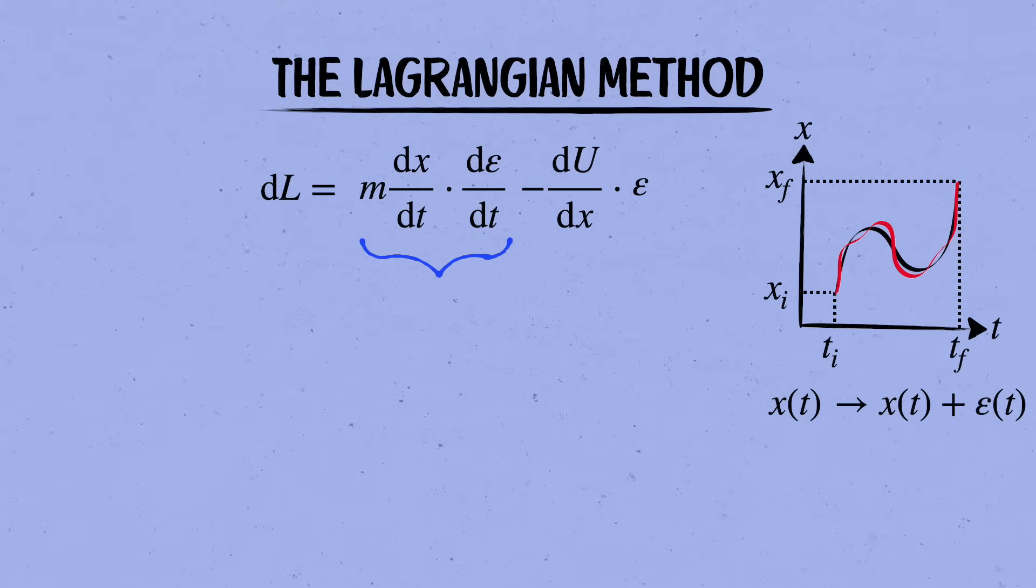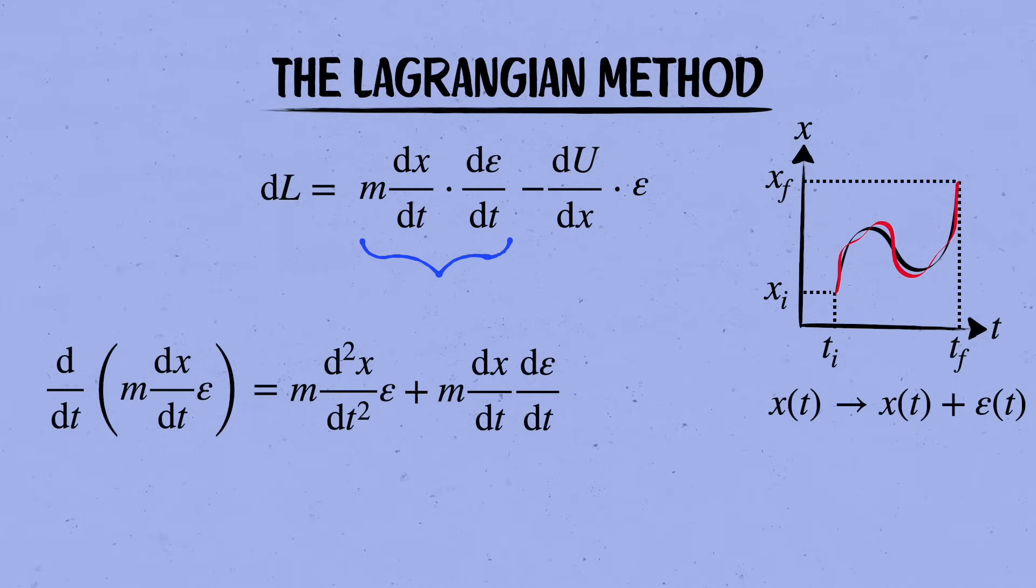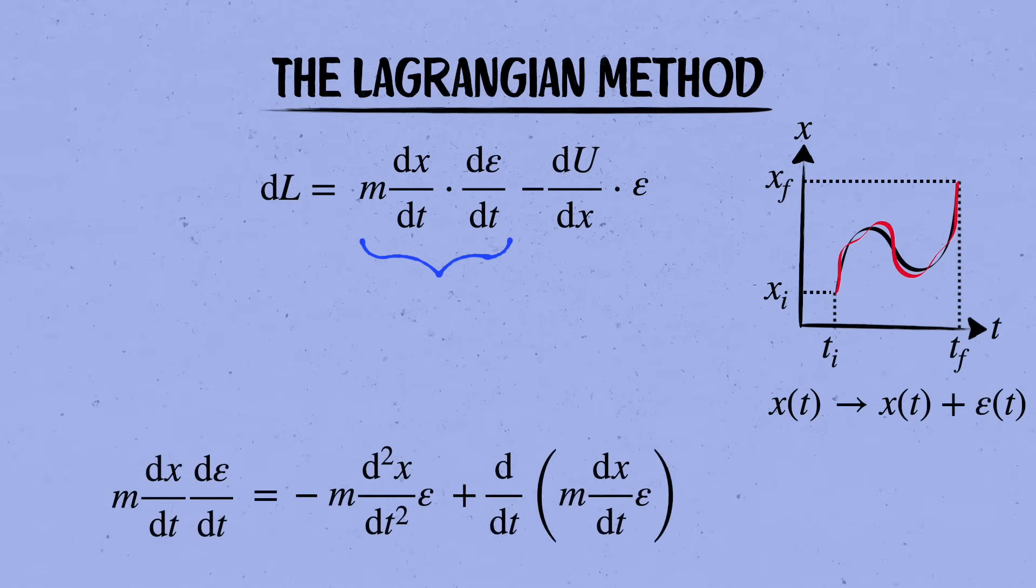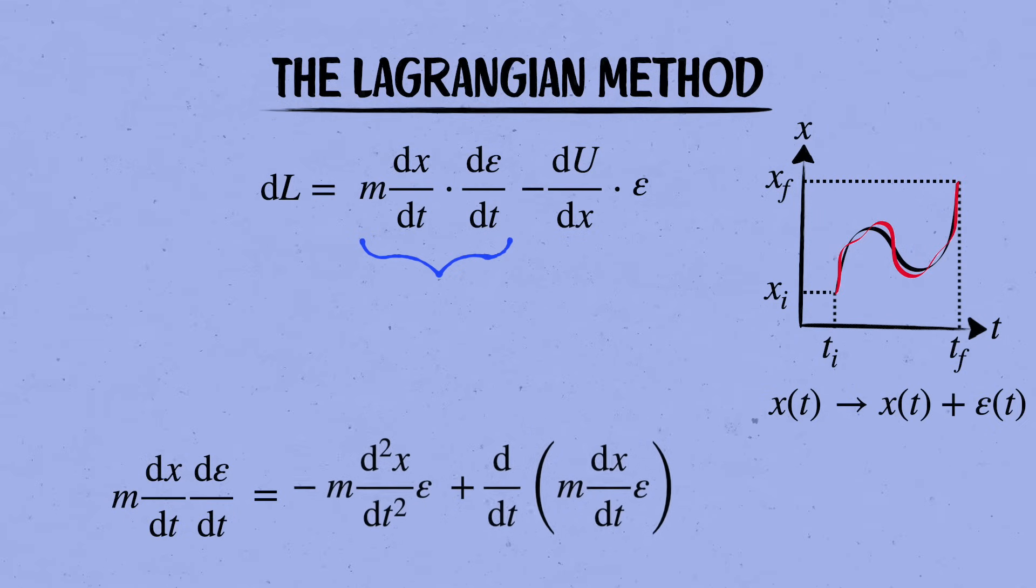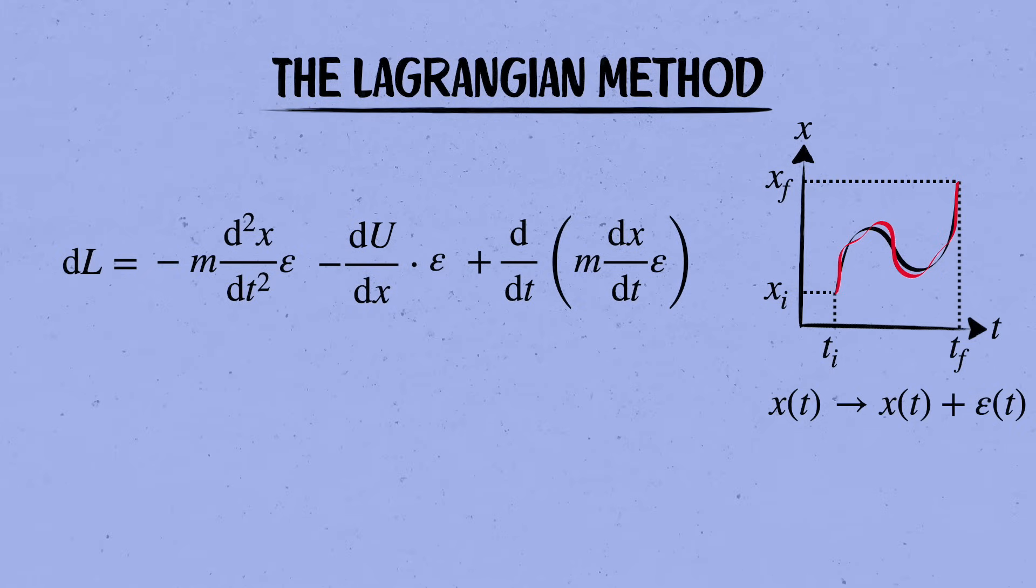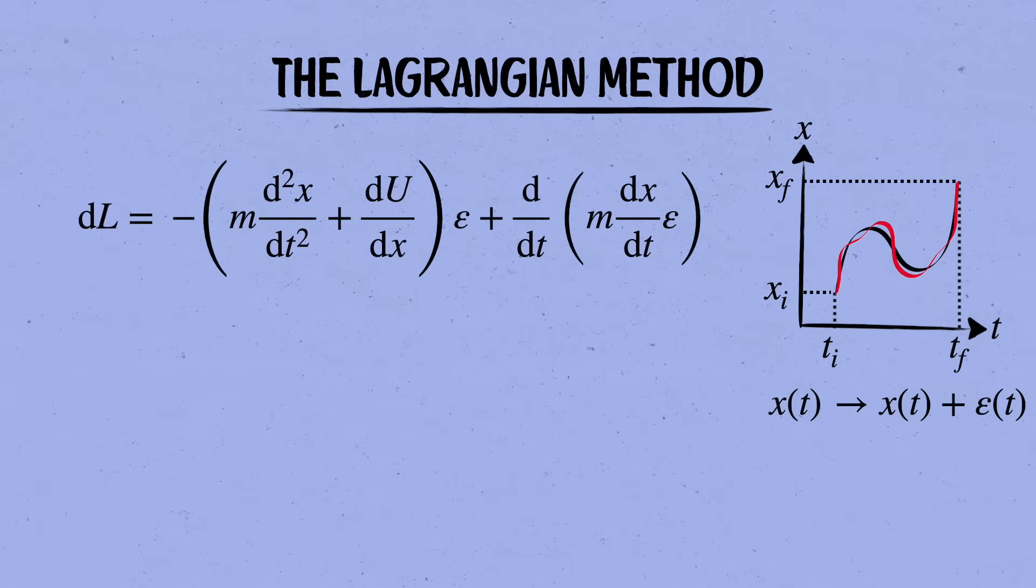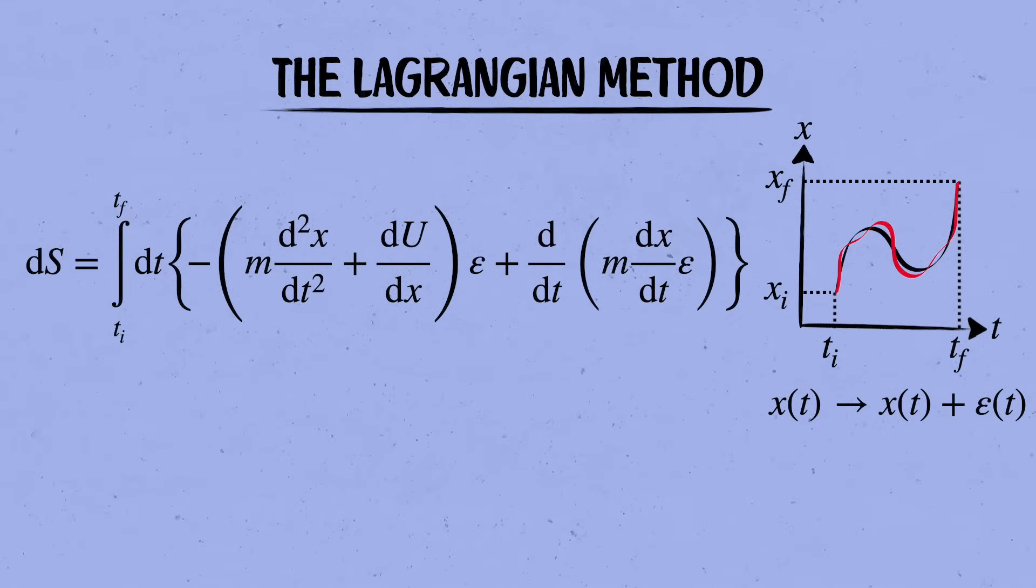Next, we need to integrate the first term by parts. All that means is that we're going to use the product rule for derivatives. The derivative of this whole thing, m times dx by dt times epsilon, is m times the second derivative of x times epsilon plus m times the derivative of x times the derivative of epsilon. And we can flip that around to write m dx by dt d epsilon by dt like this. Now we put that back in for the first term in dl. What integrating by parts bought us is that we can now pull out the common factor of epsilon from the first two terms here. So that's how much the Lagrangian changes when we make a little change in the trajectory. The change in the action is the integral of this over time.